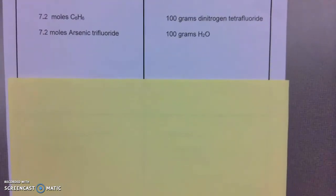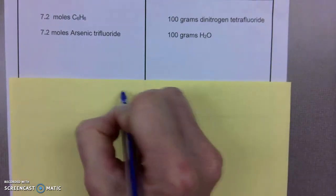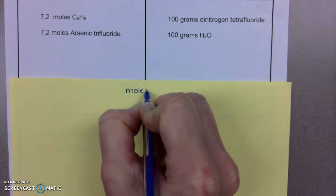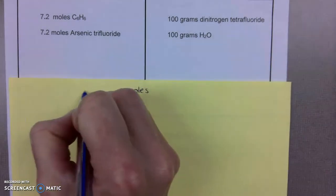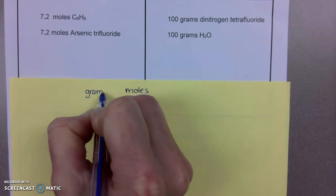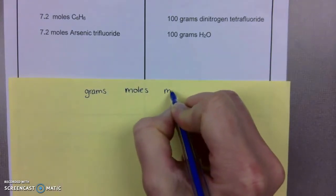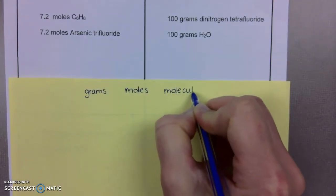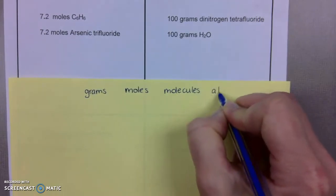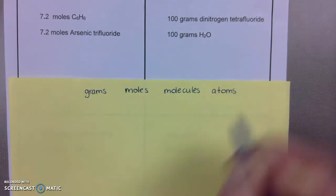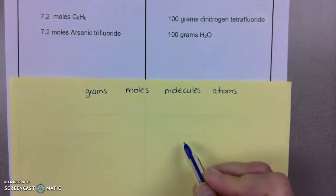I'm going to use a separate sheet of paper so we have better notes here. I'm going to put grams on the left, moles in the middle, molecules on the right, and then I'm actually going to write the word atoms because we are going to further into lessons about a conversion.